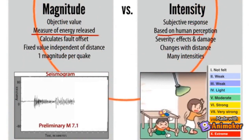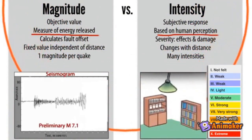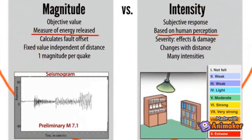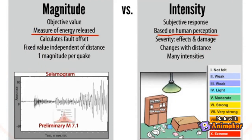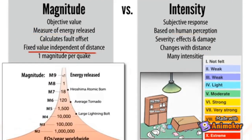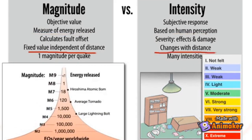Seismic intensity is the measurement of the strength of shaking at a specific location, determined from effects on people, human structures, and the natural environment, and it produces a range of shaking intensities in different locations. Thus, unlike earthquake magnitude, which is the same for all locations, the seismic intensity you feel depends on where you are.